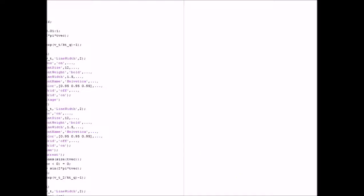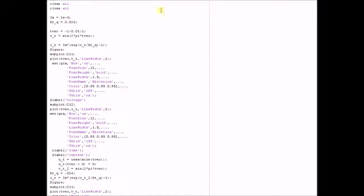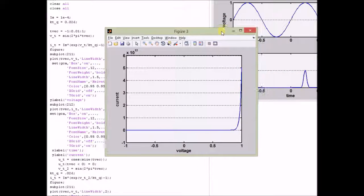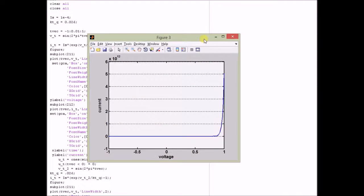Now, by plotting the relation between V of t and I of t, we can clearly see that for a PN diode,